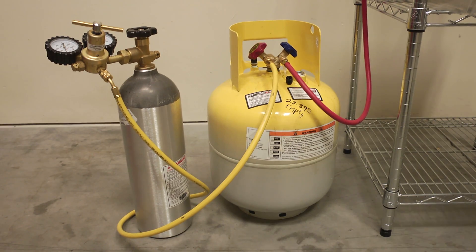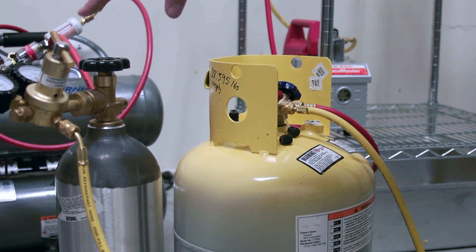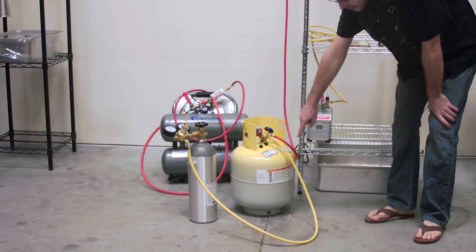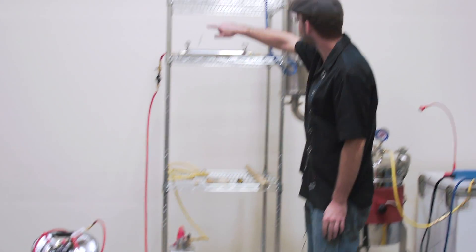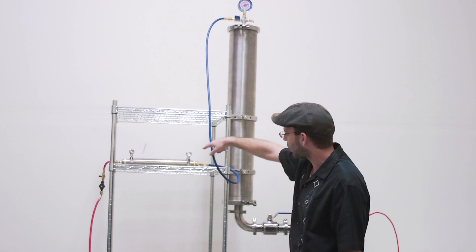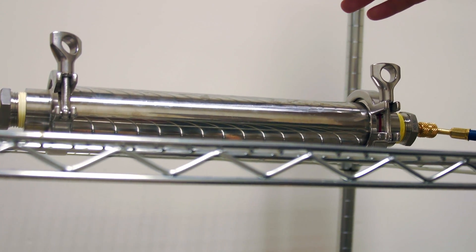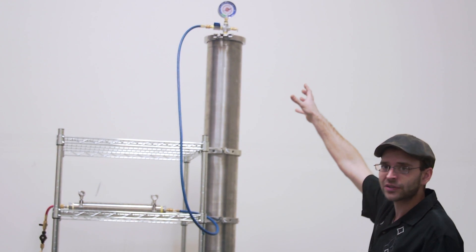You have the nitrogen fill tank which pressurizes the fill tank with nitrogen gas, forcing the liquid solvent through the carbon filter into the extraction chamber. This is where the plant material is at.